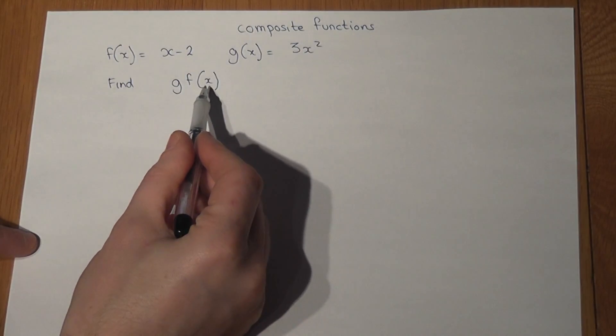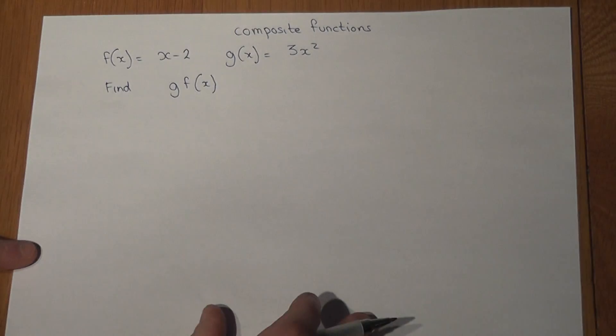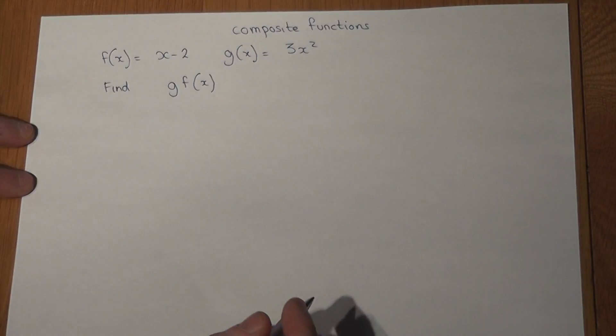means that our input x is being applied through two functions. This can be visualized as function machines where